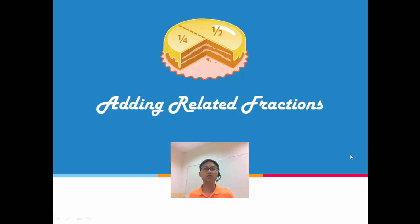Now what is related fractions? Related fractions basically means that the denominators are not the same. This is different from like fractions. Like fractions are when the denominators are the same. Related fractions are when the denominators are not the same.